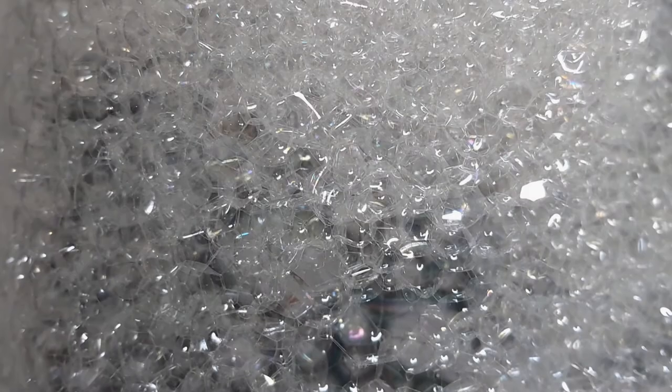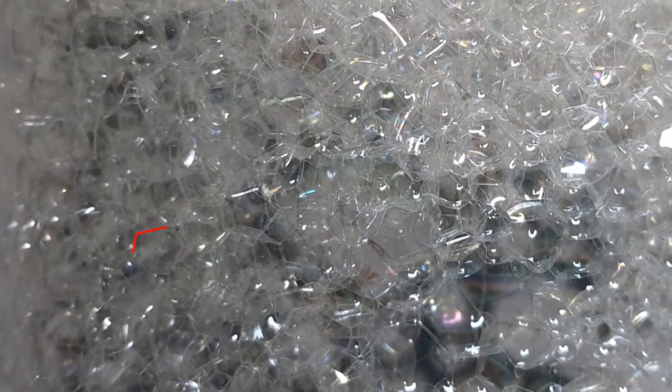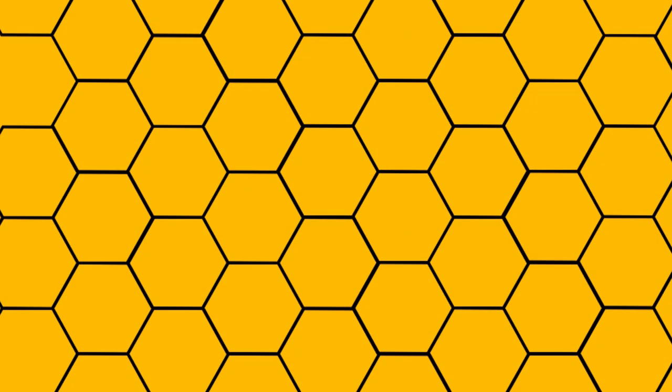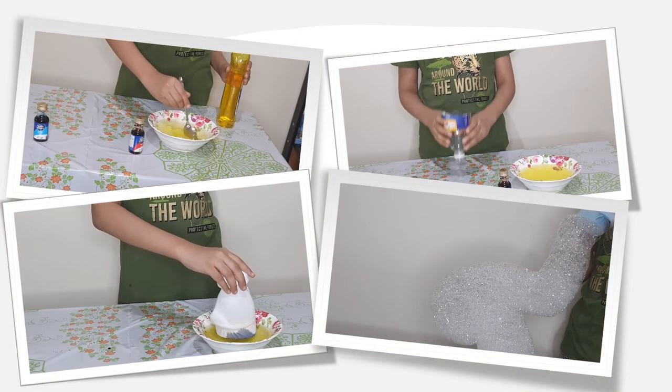Now we can observe another interesting thing from this bubble snake: bubbles cling to each other and the intersections make 120-degree angles, which is the same angle we can see in hexagons. Why hexagons? If we pack spherical bubbles in a single layer, it can cover only 90% of the area on a plane and 10% is empty. Hexagons are the shapes that best fill the plane and leave no wasted space.